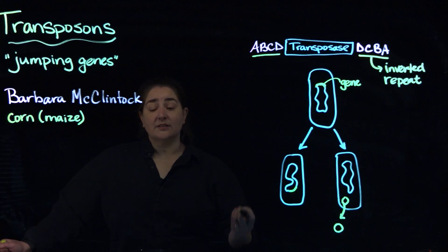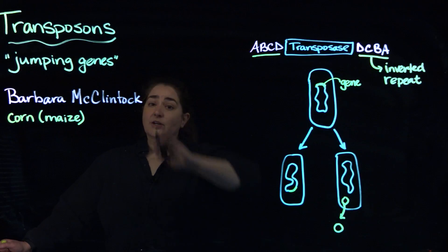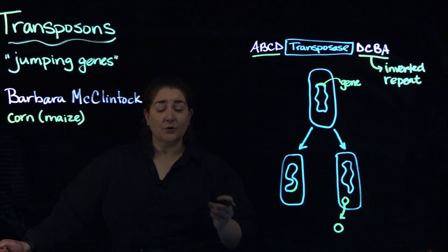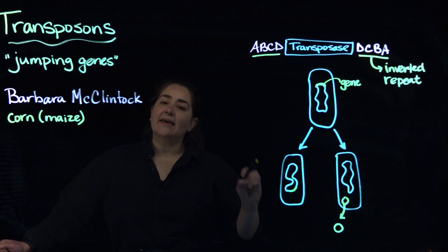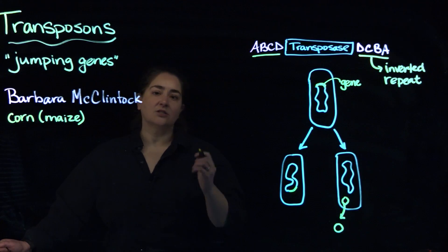The reason for the different colors and the mottling that you see are transposons or transposable elements, because what happens is you get essentially bits of DNA that kind of jump around in the genome and that influences gene expression.